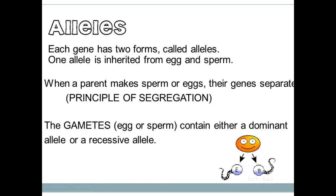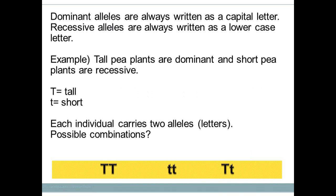For another example, say you're comparing eye color and brown eyes are dominant to blue eyes, which are recessive. Brown eye color would be written as a capital B because it's dominant, and blue would be written as a lowercase b. Brown is represented by capital B and blue by lowercase b.